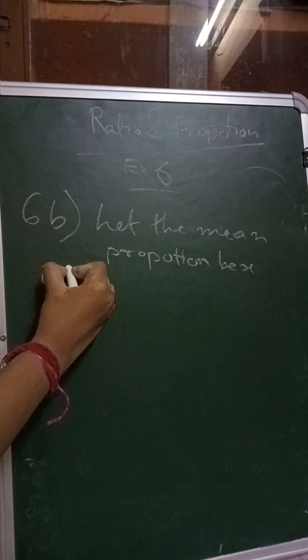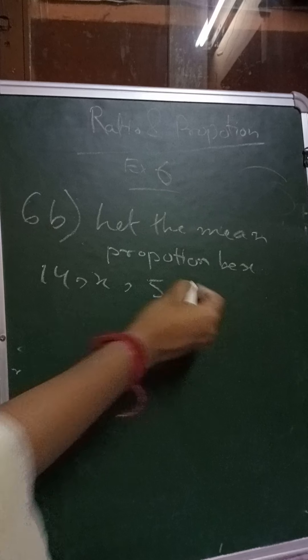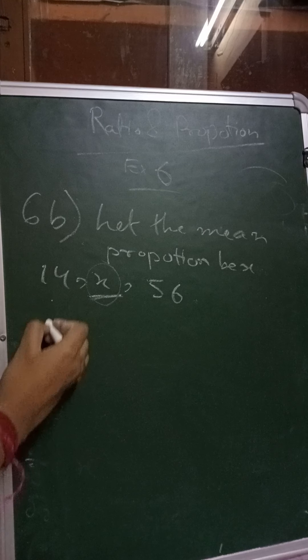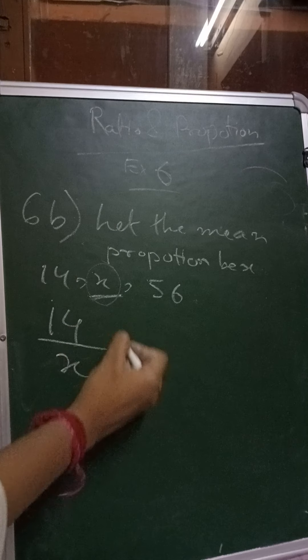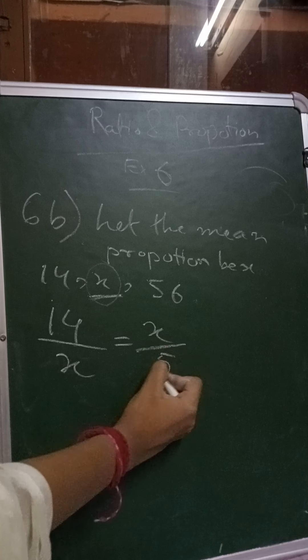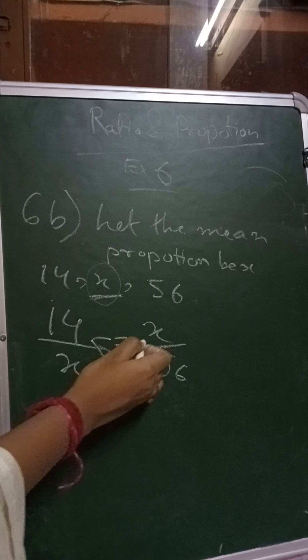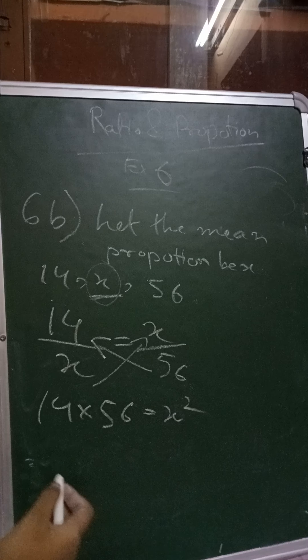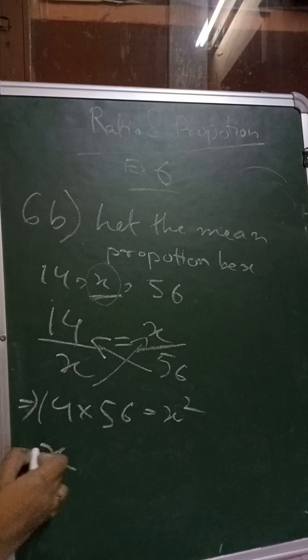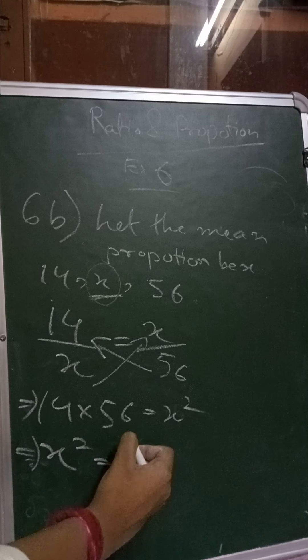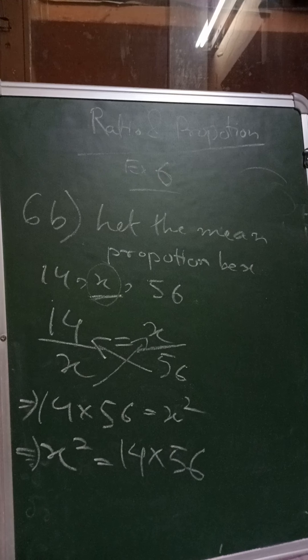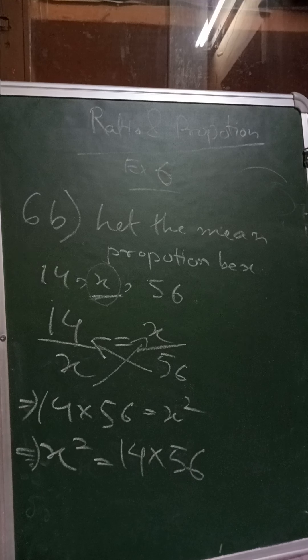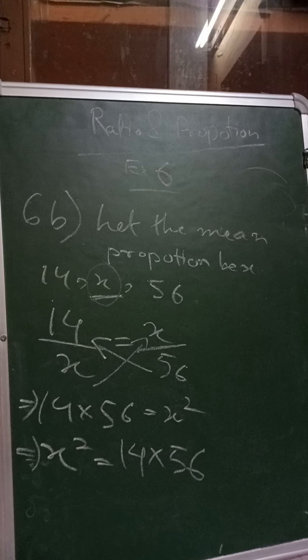So we can write it as 14, x, 56. Now in this case, x is in the middle. So the x will repeat. So we can write it as 14 by x equals to x by 56. So this will go here and this will go there. So 14 into 56 is equals to x into x is x square. Or we can write it as x square is equals to 14 into 56. So 14 into 56 is, I think, 784.